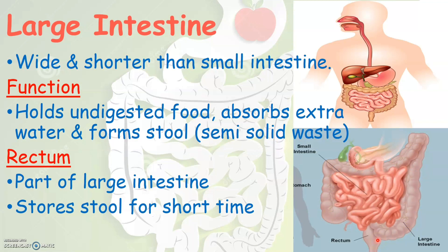Now, what does this large intestine do? The large intestine will hold this undigested food that has come from the small intestine and it will absorb all the extra water that is present in this undigested food. It will then form a semi-solid waste which is otherwise called as stool.